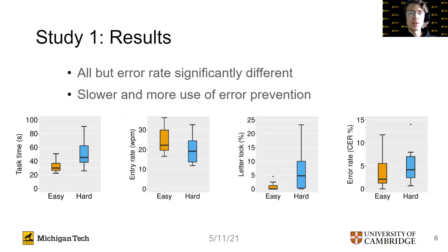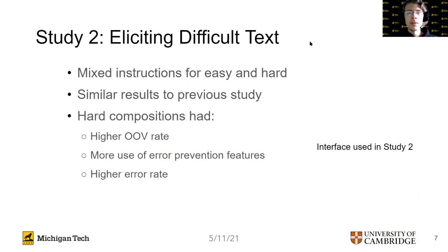Each of these graphs depicts the difference between conditions on one of four metrics. Starting on the left, we found that hard compositions had a higher and more variable task time than the easy compositions. Moving to the second graph, we discovered similar distributions of entry rates, but significantly lower for hard compositions. Next, we found a drastically higher use of the lock letter feature in hard compositions, coupled with barely any use in easy compositions. In the final graph, we can see the error rate was slightly higher in hard compositions, but this difference was not significant.